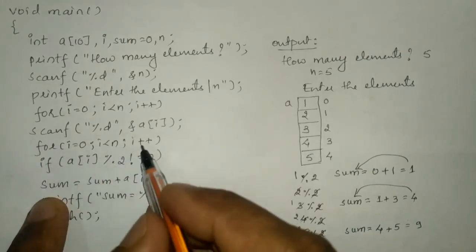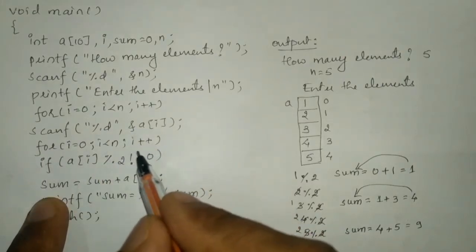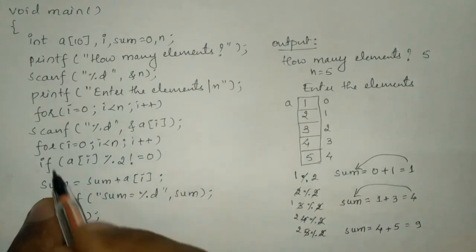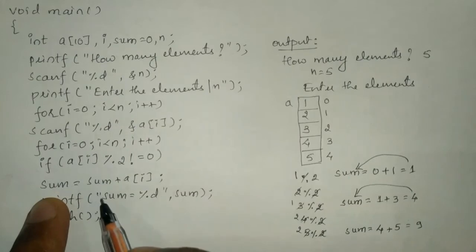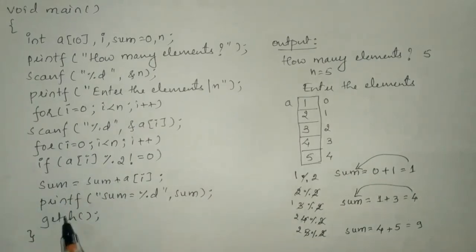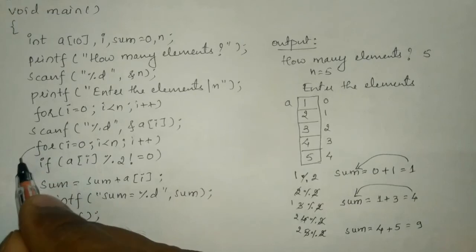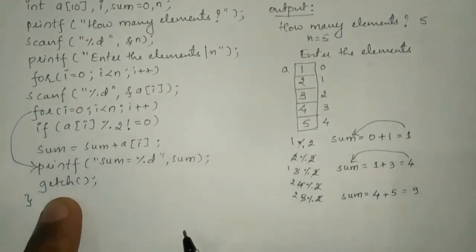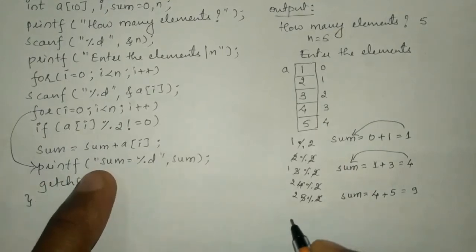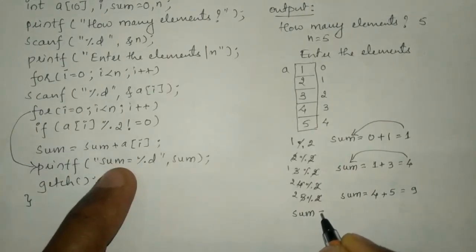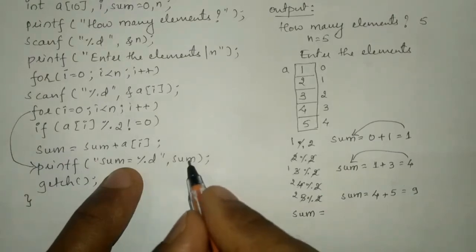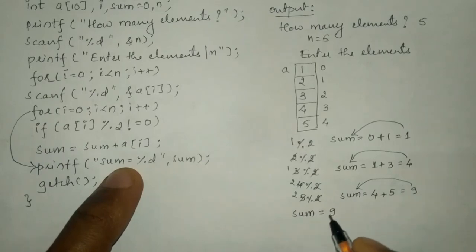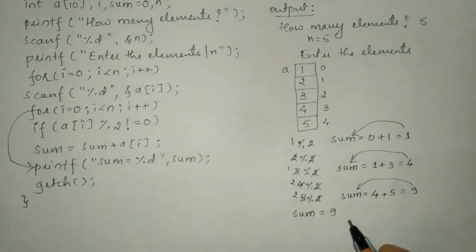Control transfers back to the for loop incrementing i by 1; now i becomes 5. There is no index number 5, so the condition becomes false and control comes out of the looping structure. It executes the next printf statement, printing 'sum is equal to %d' with the value of sum, which is 9, so it displays 9.